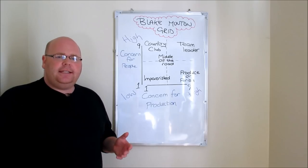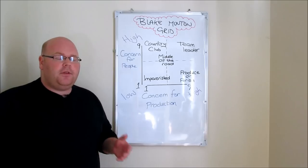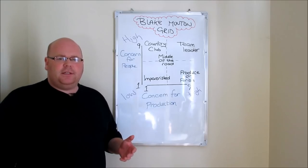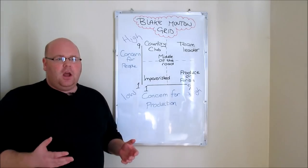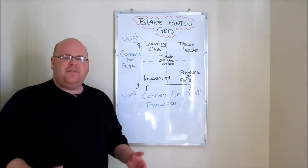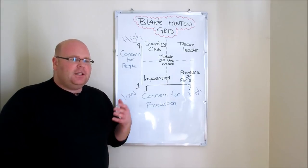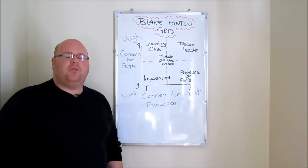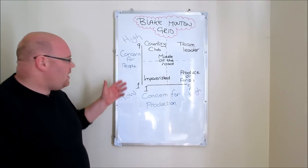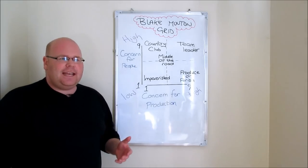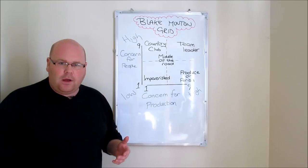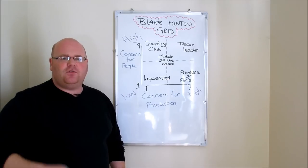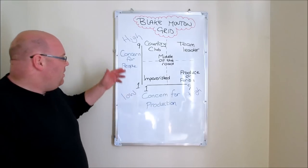Blake and Mouton did their work and studies during the 1960s, similar to when McGregor was developing his own theories of management. They interviewed a whole host of people in managerial positions, looking to create categories of people adopting similar styles and provide commentary on the effectiveness of each style. One of the things they noticed as they interviewed these different managers was the concern that they had for the people in their team — understanding them, knowing them, protecting their welfare.